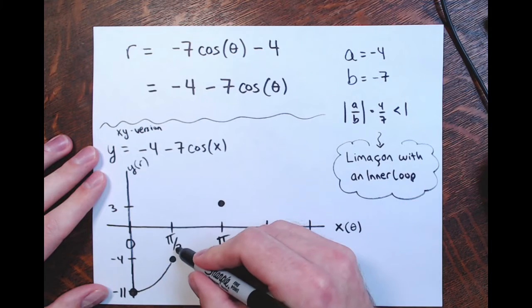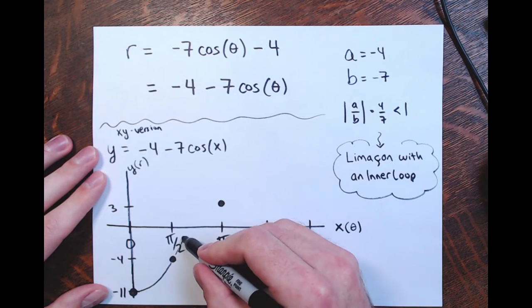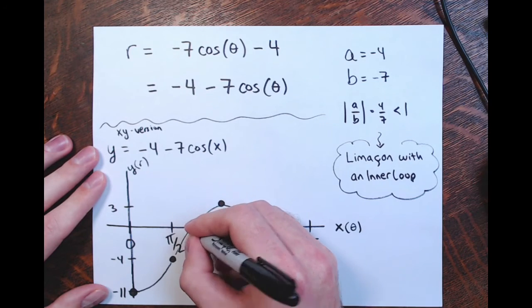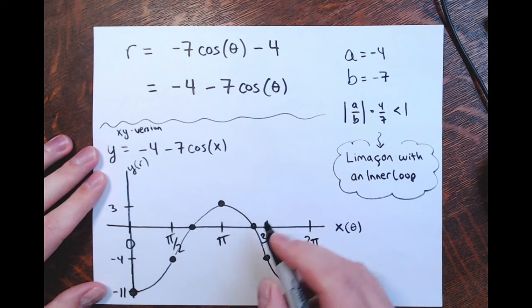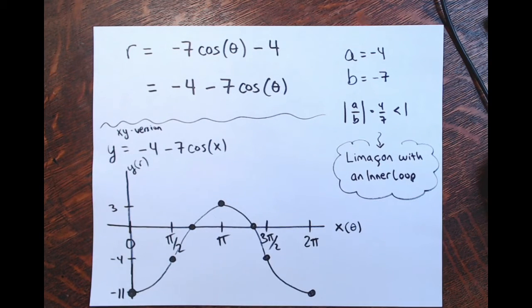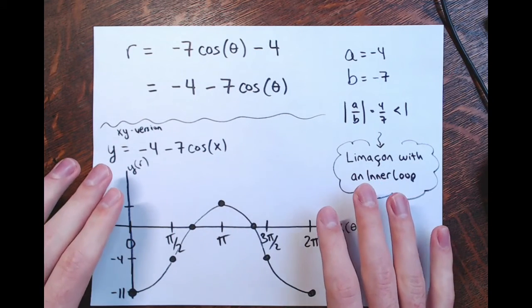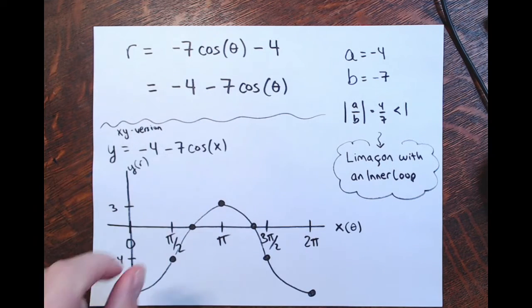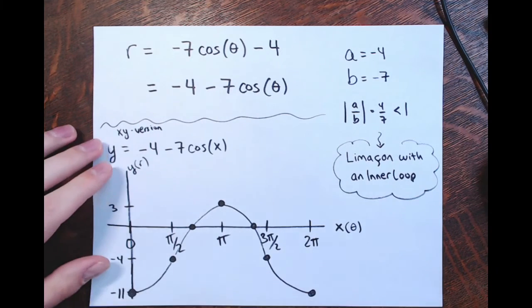And I'm getting this cosine wave curve. I'll also point out the points where it crosses the x-axis — where the value of r is 0. Let's use this graph as a guide to help us try and graph this polar equation on a polar grid.